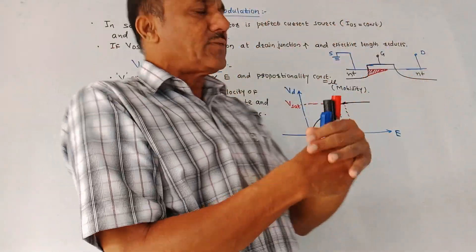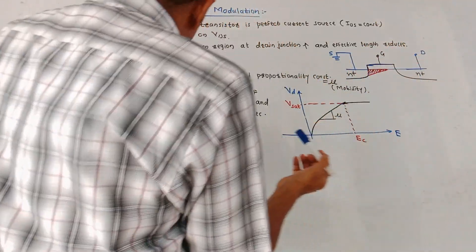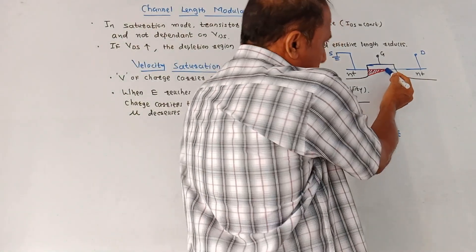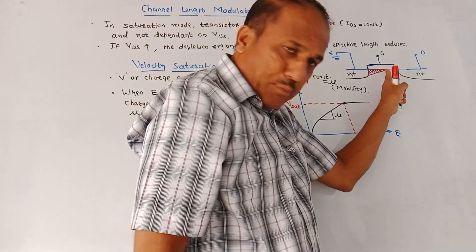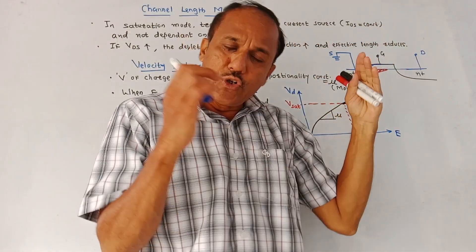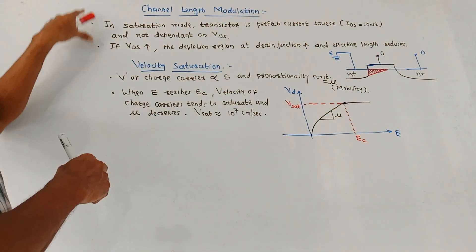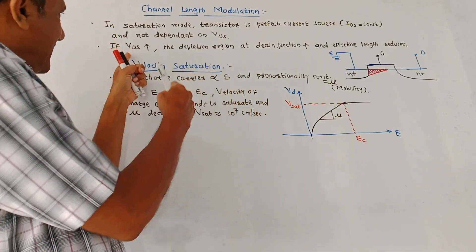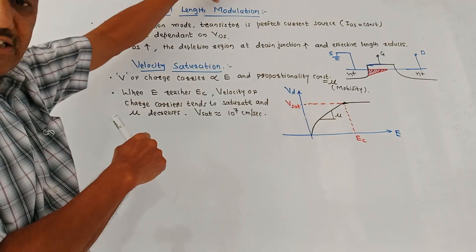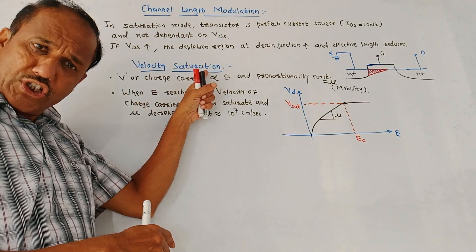There is a condition called the pinch-off condition. As VDS goes on increasing, this pinch-off point gets shifted towards the source terminal, which reduces the effective length of the channel. This phenomenon — in which as we increase VDS, the length of the channel decreases — is called channel length modulation.